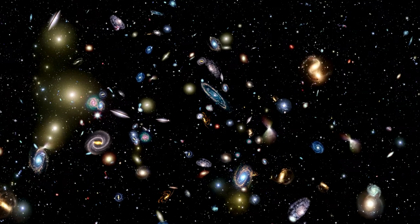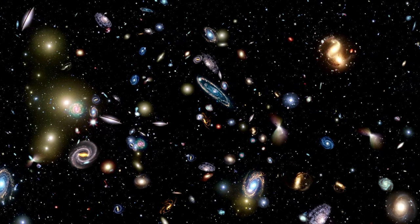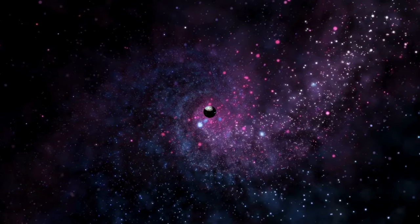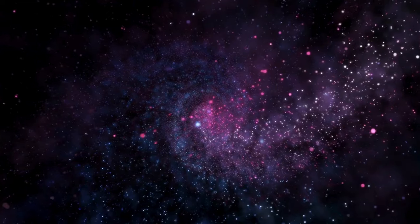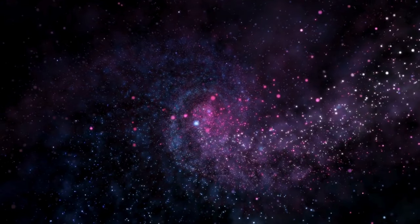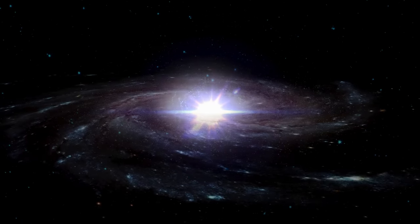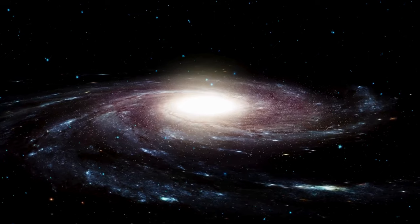Our Milky Way began as several small proto-galaxies, approximately 13 billion years ago. These were made of the first generations of stars and the dark matter that dominated their gravitational pull. Over time, these proto-galaxies collided and merged, gradually building the Milky Way's vast spiral.